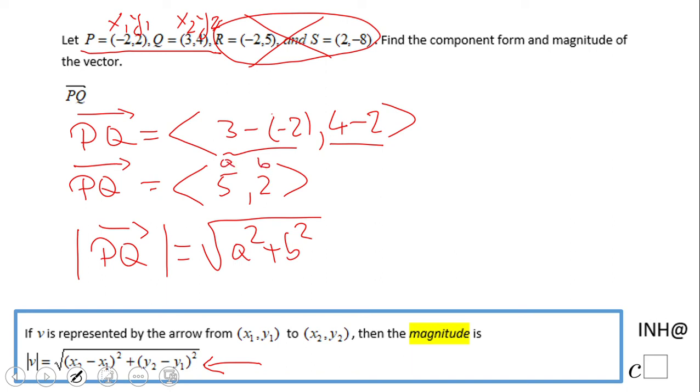So we're going to have square root of 5 squared plus 2 squared. If you have negatives, use parentheses. So we have here 25 plus 2—that'll be 25 plus 4—that will be square root of 29. That is the magnitude of the vector PQ.